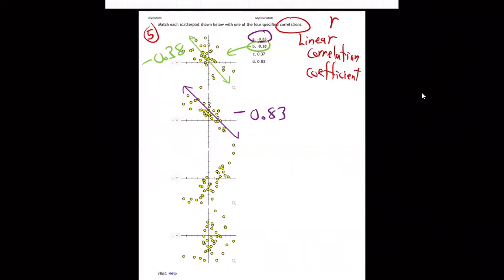How about this one right here? The dots are going up to the right, fairly tight. That's got to be the 0.83 right there. Nope, circled the wrong one, didn't I?